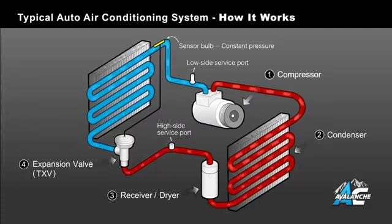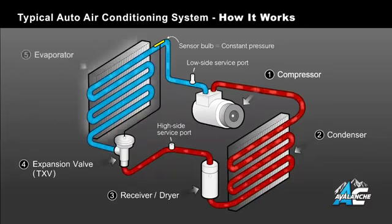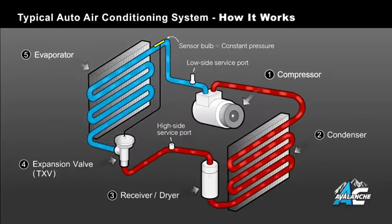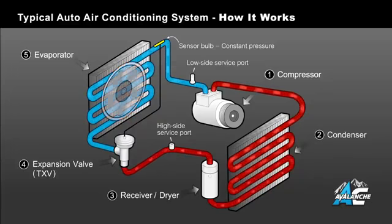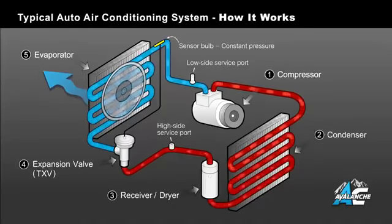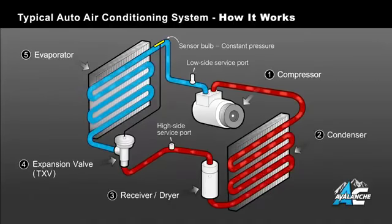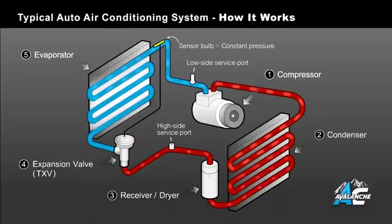This low pressure liquid flows from the expansion valve directly into the evaporator, at which point it begins to boil and turn back into a low pressure gas, absorbing heat as it does so. This chills the walls of the evaporator and the blower motor pushes this cool air through the vehicle's dashboard vents. As you can see, the liquid arrows turn back into a gas as indicated by bubbles.